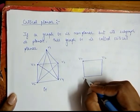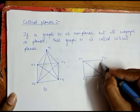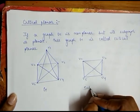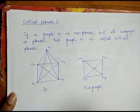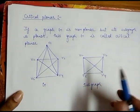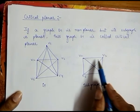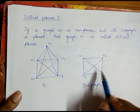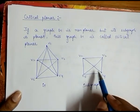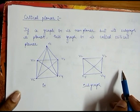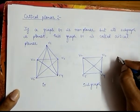So I take a subgraph with vertices v2, v3, v5, and v4, connected like this. This is a subgraph of graph G. Now I have to check whether I can redraw this subgraph without any crossover point. If I am successful in redrawing it, then this graph G is called critical planar.